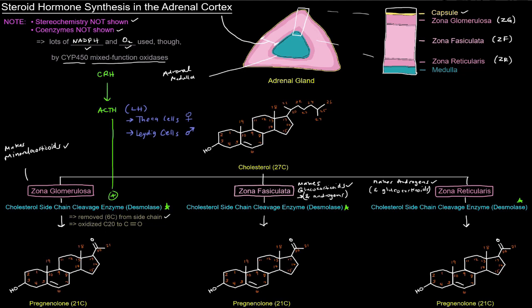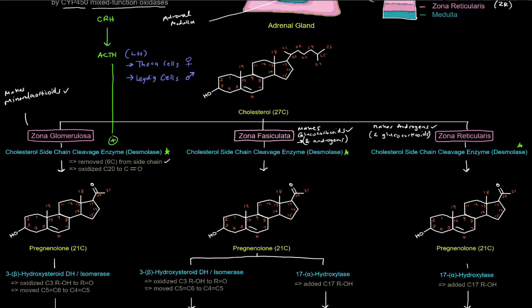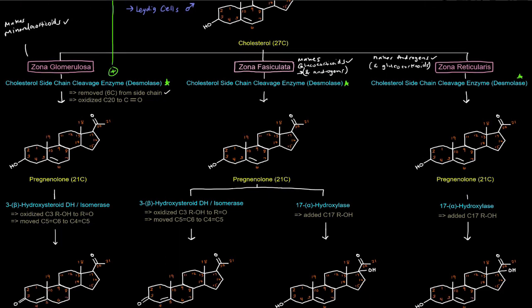Adrenocorticotropic hormone stimulates the growth of the adrenal cortex, as well as the synthesis and release of steroid hormones from the cortex — so we can say it stimulates the growth and secretory activity of the adrenal cortex. Now we're going to go through each of the zones separately to see what steroid hormones are made there. Let's start in the zona glomerulosa. We've already shown making pregnenolone, so let's see the next steroid that's made.